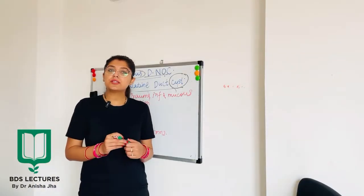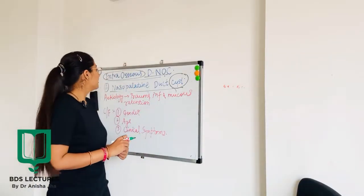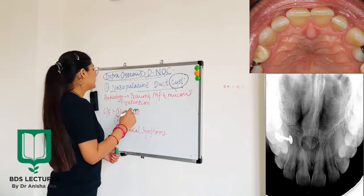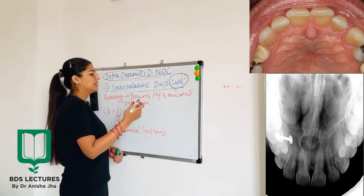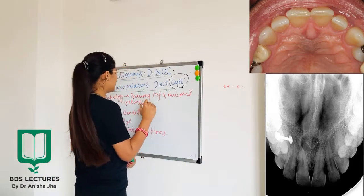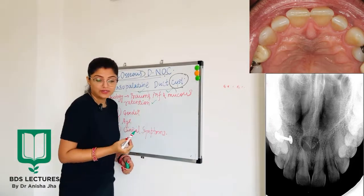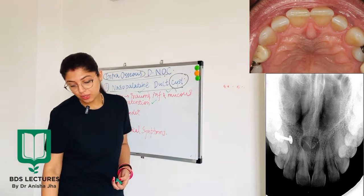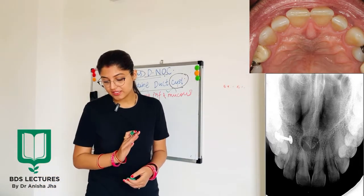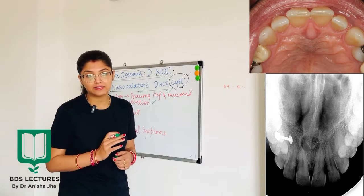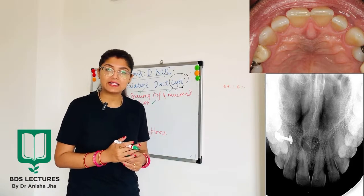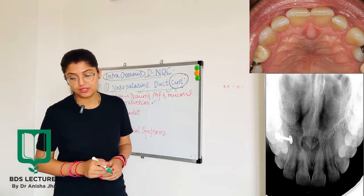Regarding the etiology of the nasopalatine duct cyst, the causes are trauma, infection, and mucus retention. The spontaneous cystic degeneration of the residual ductal epithelium is most likely the etiology.